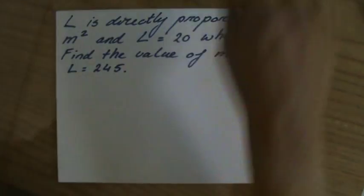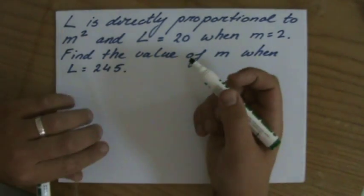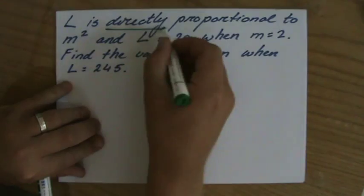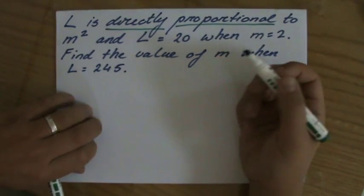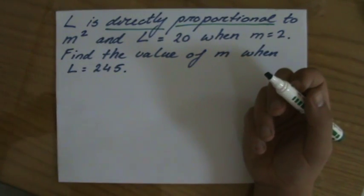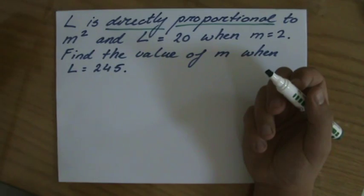Oh dear, a lot of information. Let's make some sense of it. First of all, they say directly proportional, so we're talking about variation, direct proportion if you like.